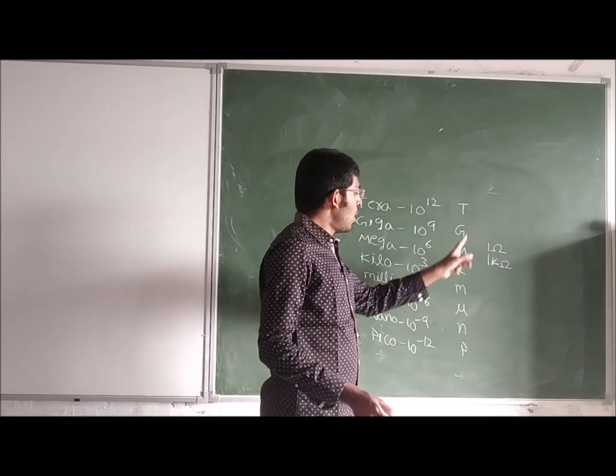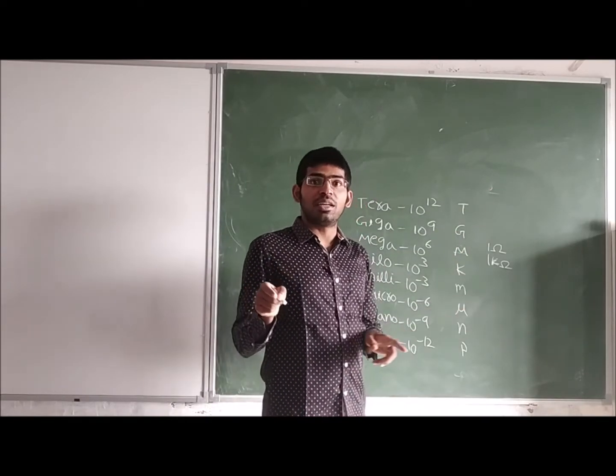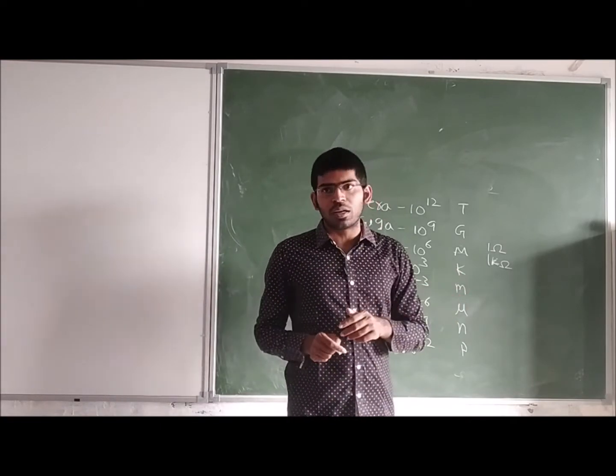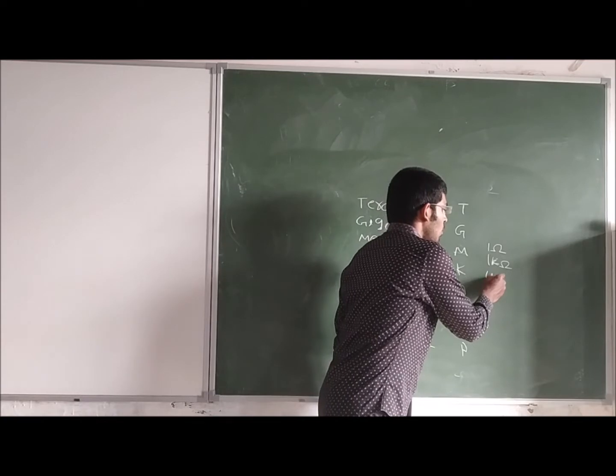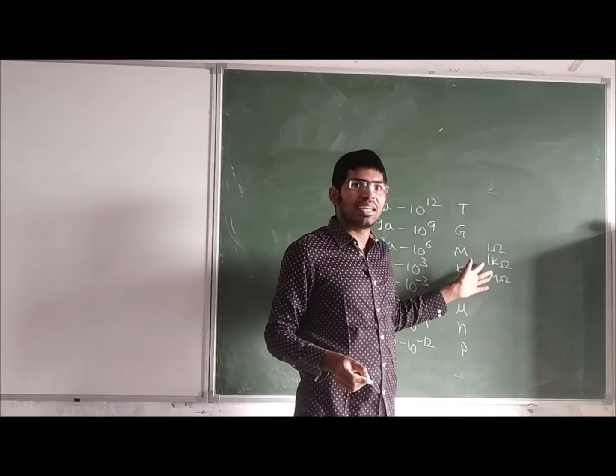Why are we using small k here? Because capital K is already defined for kelvin temperature measurement, so we have to use small k. 1 mega ohm is the measurement we use for resistance.